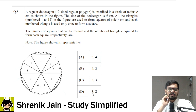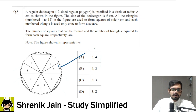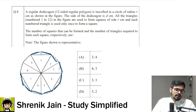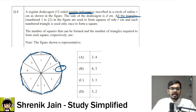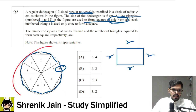Whenever this kind of question comes, you have to first understand the diagram and the data, then think about what you need, and then think of the concepts. Here they are saying we have a polygon of 12 sides — 1, 2, 3, 4, 5, 6, 7, 8, 9, 10, 11, 12 — a 12-sided regular polygon, which means all the sides are equal. So the side is d, and all the sides would be d. Second, we have triangles numbered 1 to 12 in the figure which are used to form a square of side r.